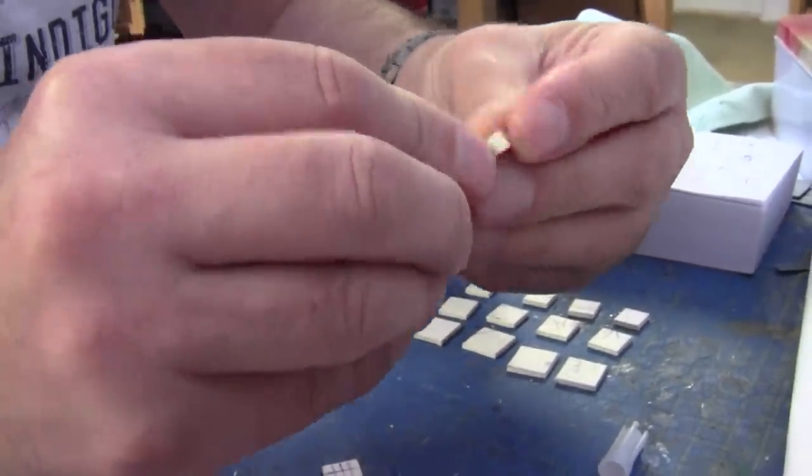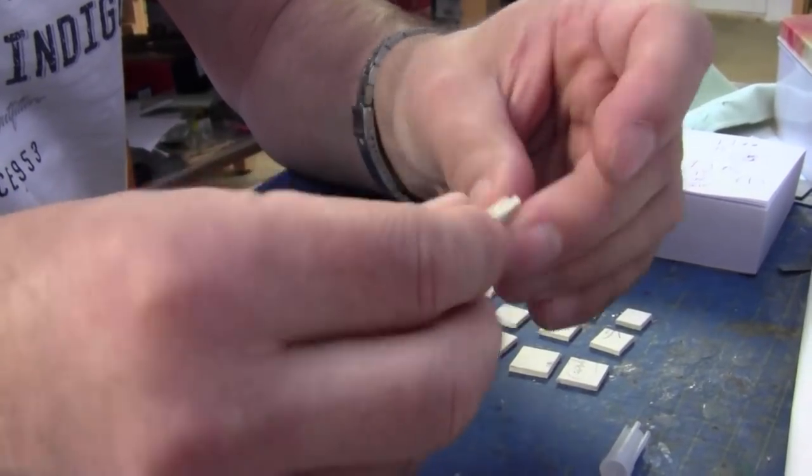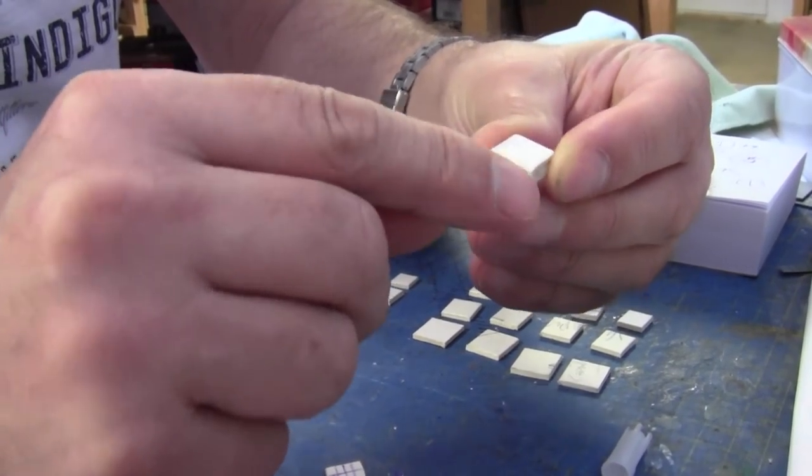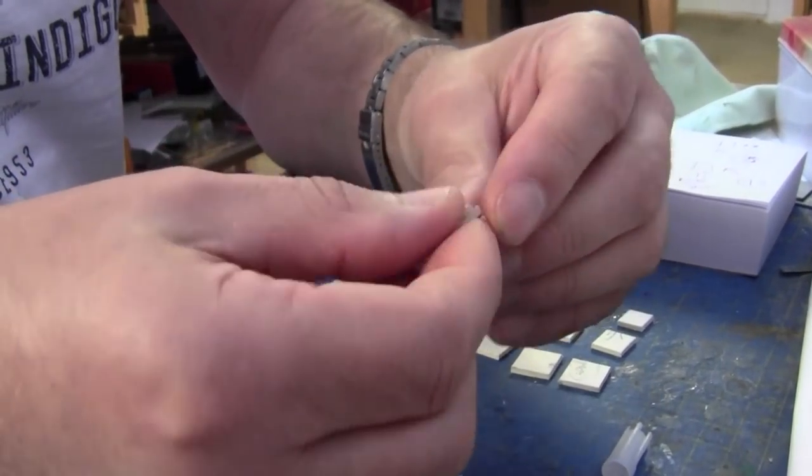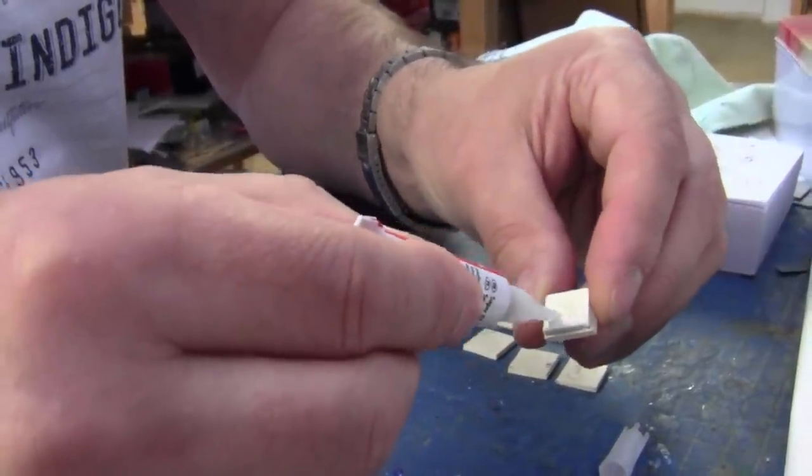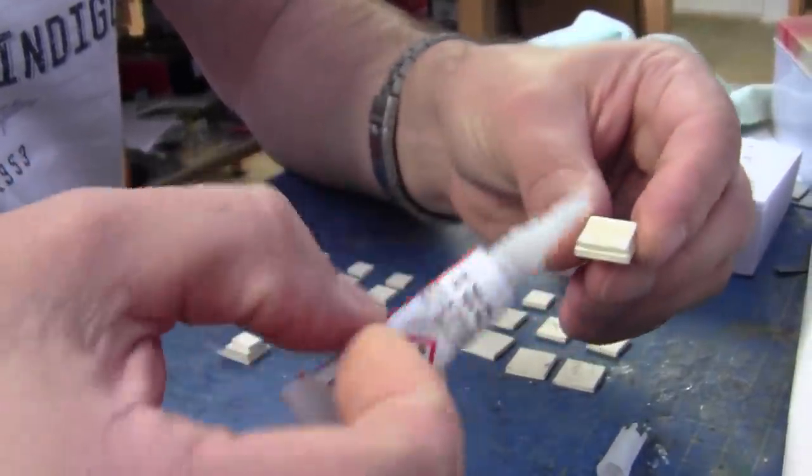The only reason why I'm using superglue is that it forms a hard crust and it also seeps into the card. Therefore, when I come to chamfer it, it should leave a nice neat finish.